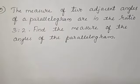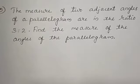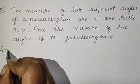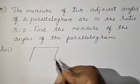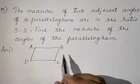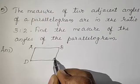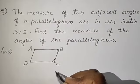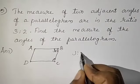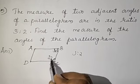Question number 5. The measure of two adjacent angles of a parallelogram are in the ratio 3 is to 2. There are two adjacent angles in the ratio 3:2. Find the measure of the angles of the parallelogram. Suppose this is parallelogram A, B, C, D. I am taking adjacent angles — angle C and angle B. If they are in the ratio 3:2, then angle B is equal to 3X and angle C is equal to 2X.